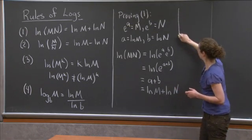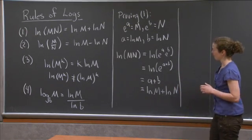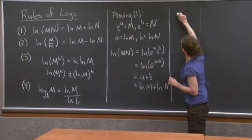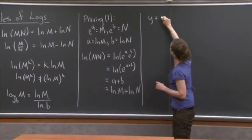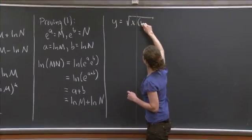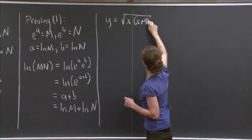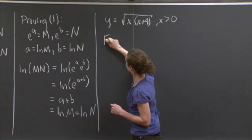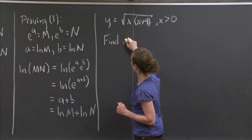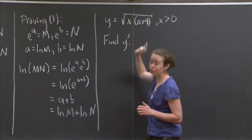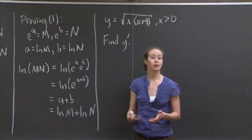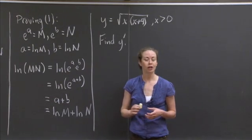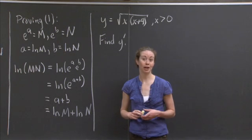Now using these rules, I'd like us to take a derivative. We're going to look at y equals the square root of x times x plus 4, assuming x is greater than 0, and find y prime. You could do this by brute force, but I'd like you to use the log differentiation technique. I'll give you a moment to try it, then I'll show you how I do it.